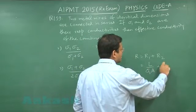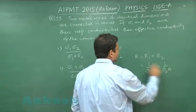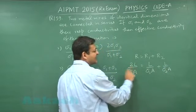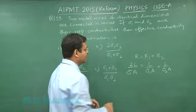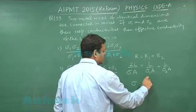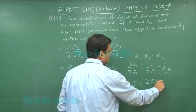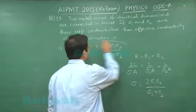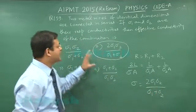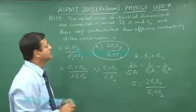So here it will be L upon sigma 2 A and here the total length will be 2L. Effective conductivity they want to understand, effective conductivity. So sigma will be simply you can say 2 sigma 1 sigma 2 upon sigma 1 plus sigma 2. So the effective conductivity will be marked as answer 2 for this question 159.